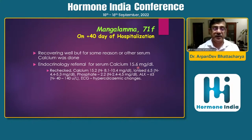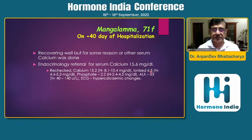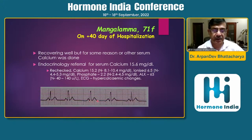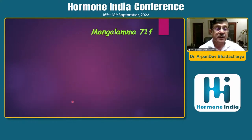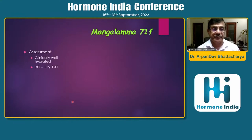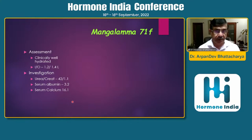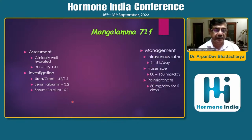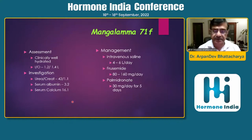We rechecked — sustained hypercalcemia: it was 15.2. Phosphate was on the lower side. Alkaline phosphatase was 463. Ionized calcium was also done. ECG showed hypercalcemic changes — shortened QT interval. Assessment: clinically well hydrated, intake-output around 1.1-1.4 litres, renal function normal. Albumin now 3.2, so albumin-corrected serum calcium became 16.1. The patient was given IV fluids, furosemide, and pamidronate as standard practice for managing hypercalcemia — 30 mg per day for five days.